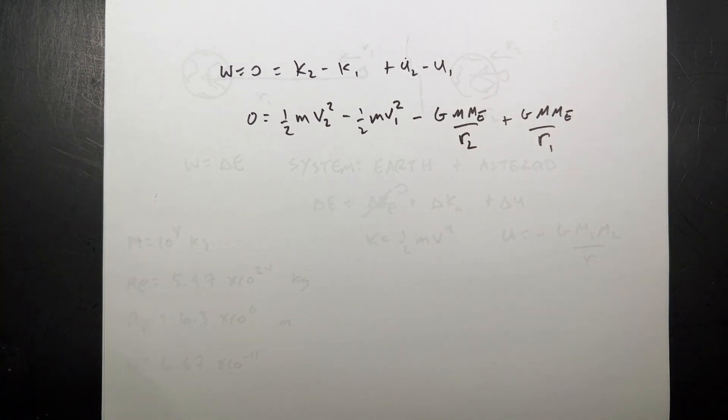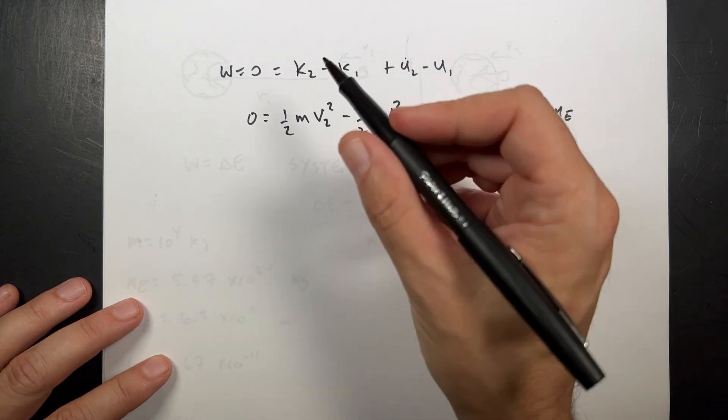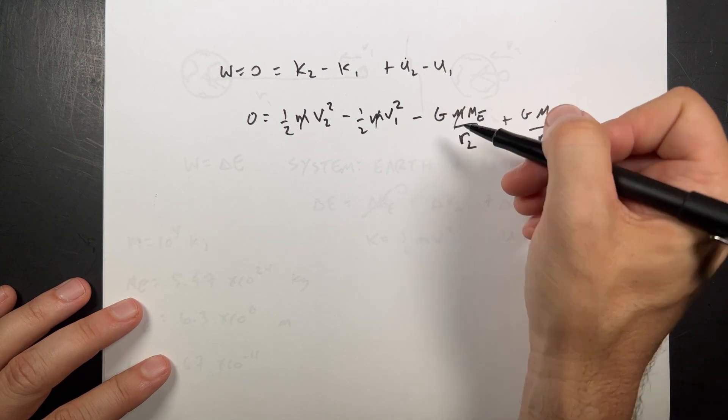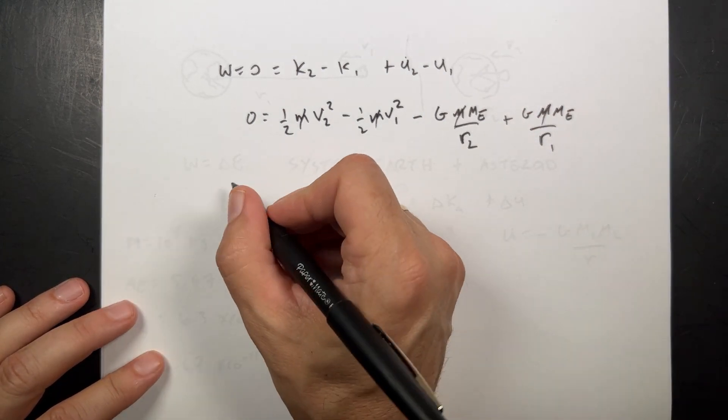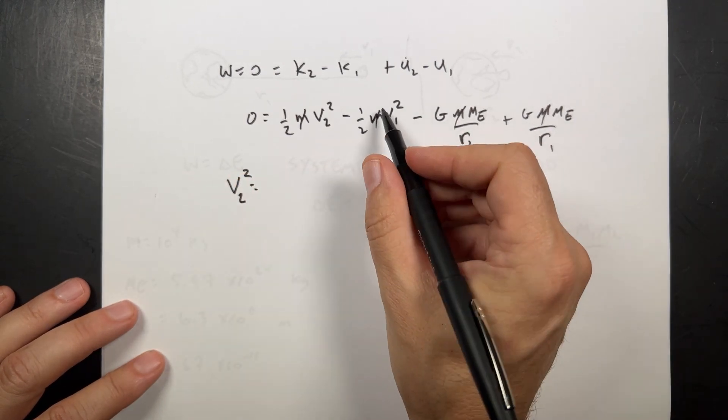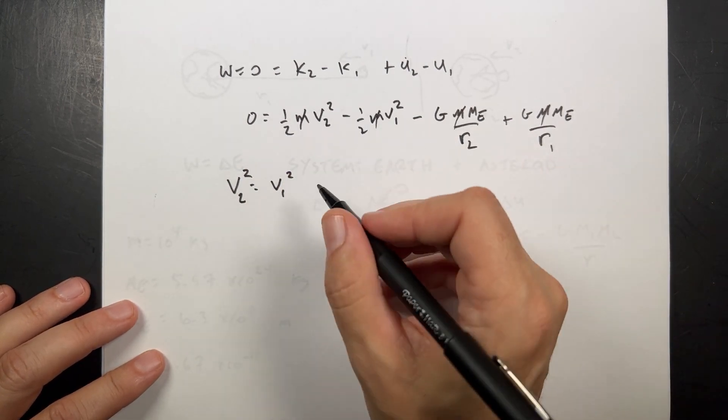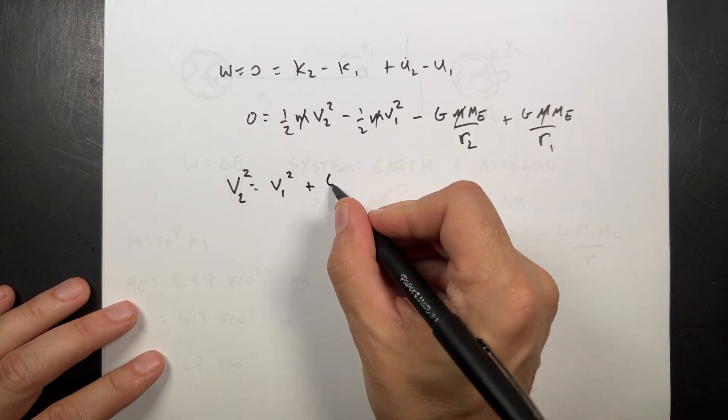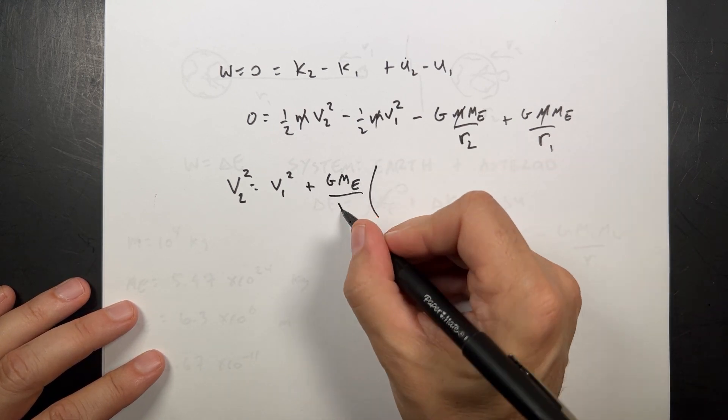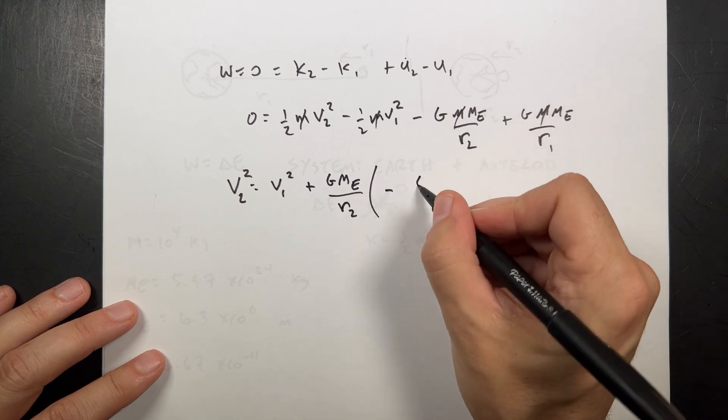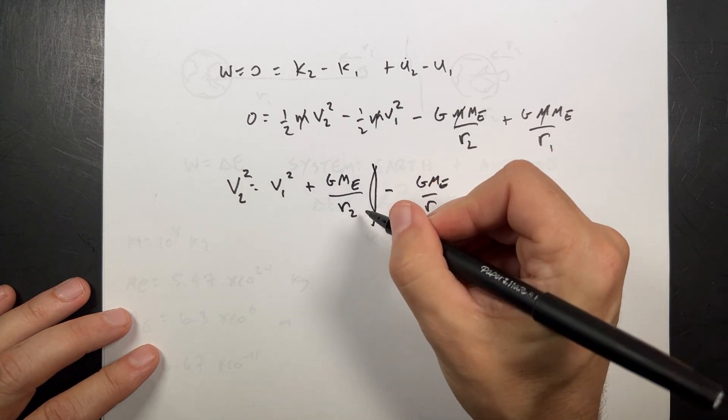Now, you'll notice that the mass of the asteroid is in every term. So I can divide both sides by that mass, and I get rid of it. Let's go ahead and multiply everything by two and solve for v2. So v2 squared is going to be equal to v1 squared. This is going to be negative because I'm going to move to the other side. Plus g mass of the Earth. And then I'm going to say, let's just put over r2. And then minus g mass of the Earth over r1. And that's it. That's just like this.